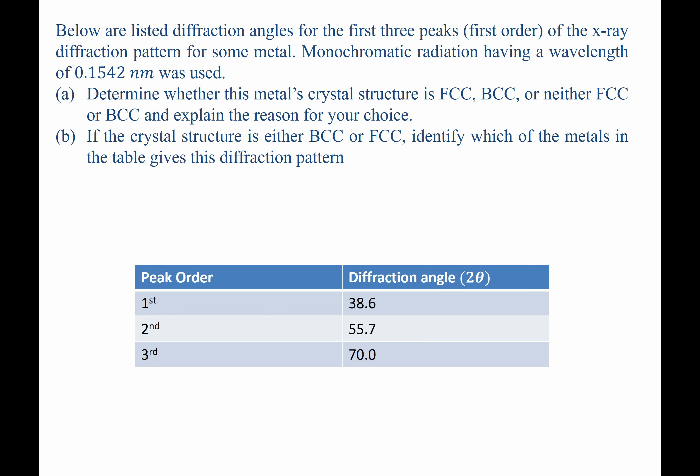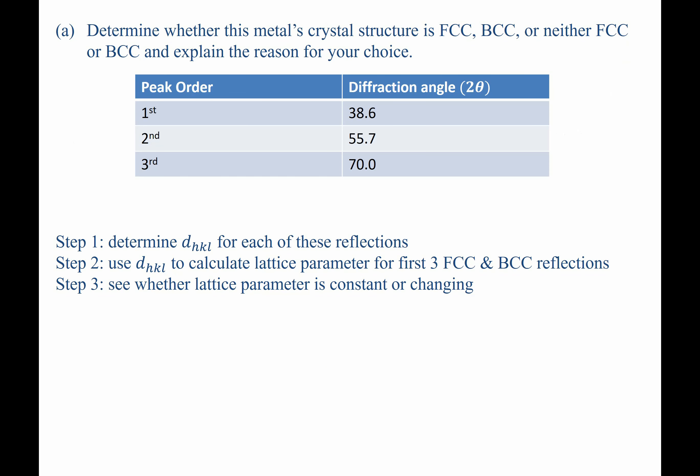We're told it's first-order reflection and we're given the wavelength. For Part A, to determine whether the crystal structure is FCC, BCC, or neither, we can follow a series of steps. Step 1: determine DHKL, the interplanar spacing, for each of these reflections. Step 2: use DHKL to calculate the lattice parameter for the first three FCC and BCC reflections. Step 3: see whether the lattice parameter is changing or constant. If it's changing, you picked the wrong structure; if it's constant, you probably have the right structure. To find DHKL, we use Bragg's Law.